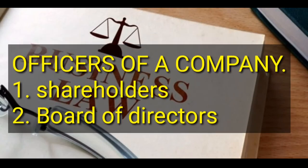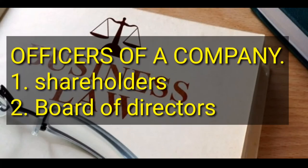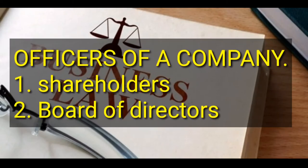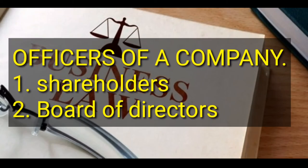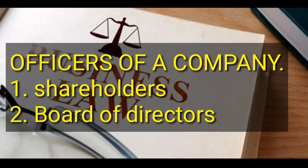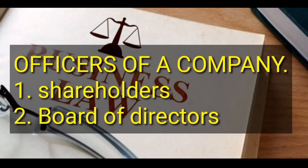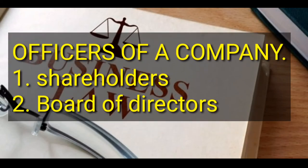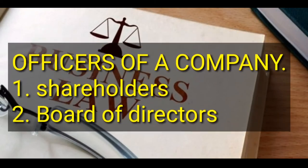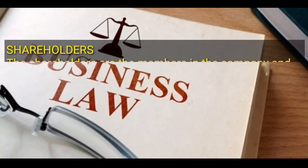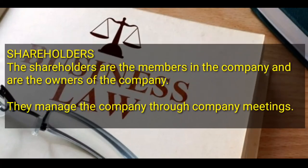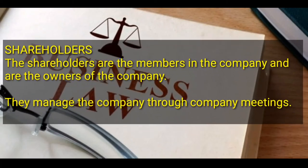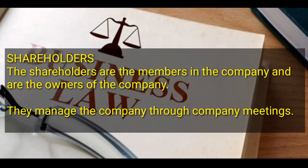Let's look at the officers of a company. Company law generally empowers the directors to manage the company's business under section 52. However, the ultimate control of the company is with the shareholders, who are the real owners of the company. The officers of the company are two: shareholders and the board of directors. Shareholders are the members of the company and the real owners, and they manage the company through company meetings.